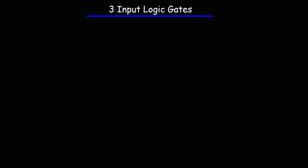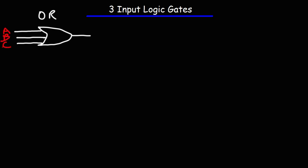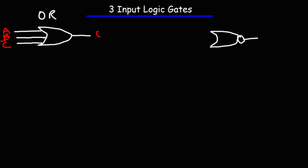Now let's talk about the three-input OR gate. The symbol for the three-input OR gate has a distinctive curved shape. For the three-input NOR gate it's very similar — we just add a circle at the output. That's the three-input NOR gate. Now let's write up a truth table just like before.